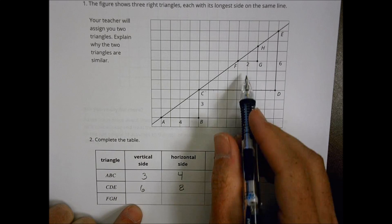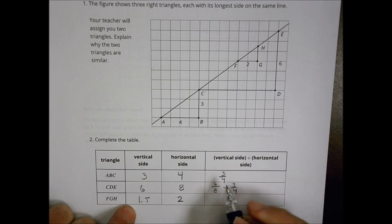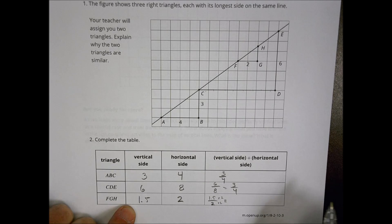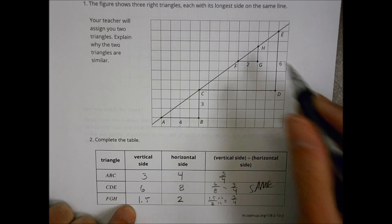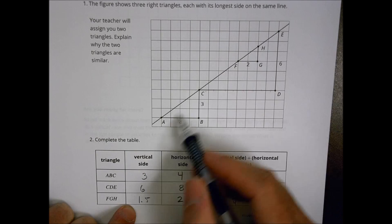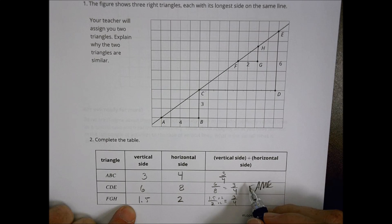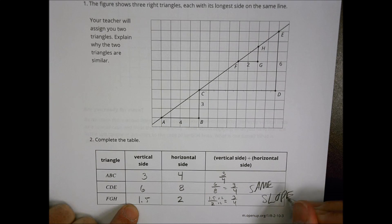And for triangle FGH, we have a vertical of 1.5 and a horizontal of two, so 1.5 over two. If I multiply both by a scale factor of two, I end up with three over four. So what we see here with these three right triangles that share the long side together is that the quotient of the vertical and the horizontal is equal.